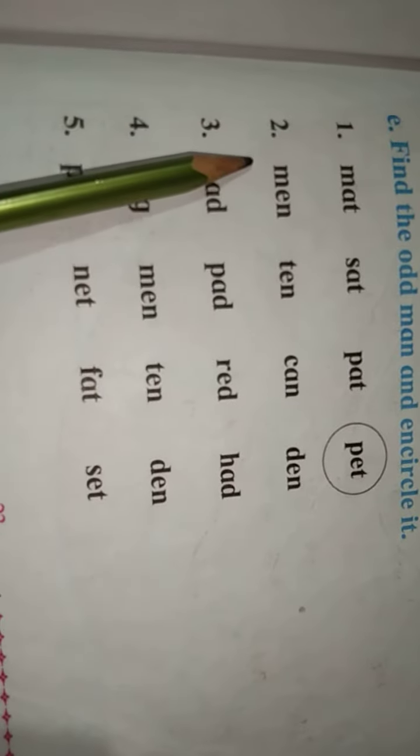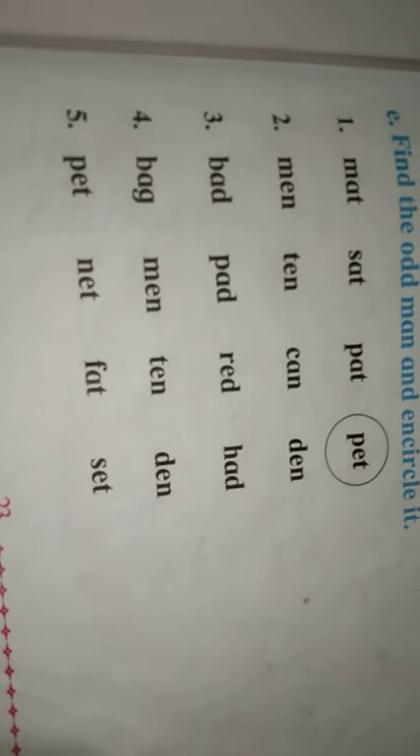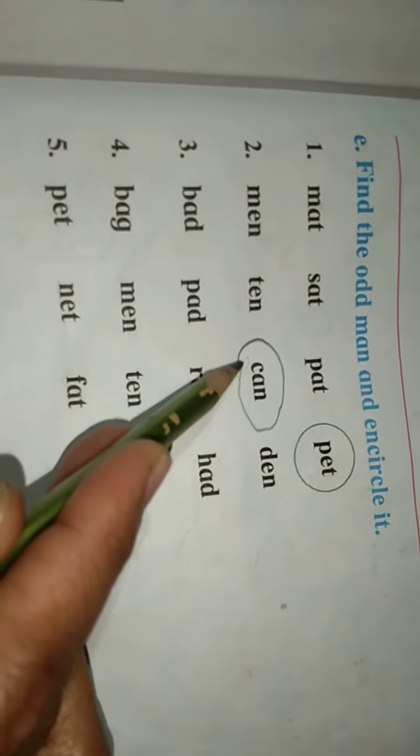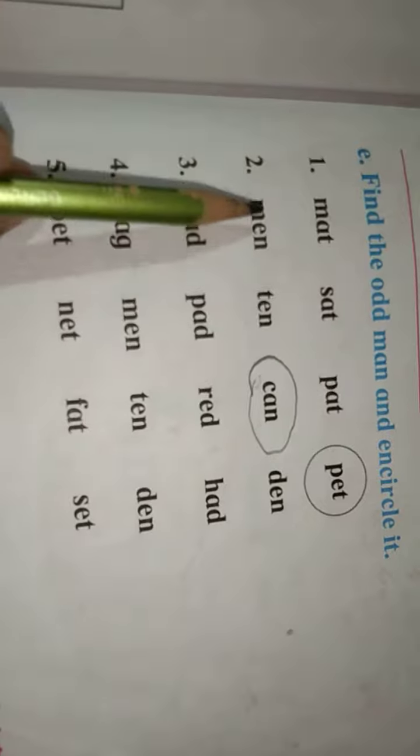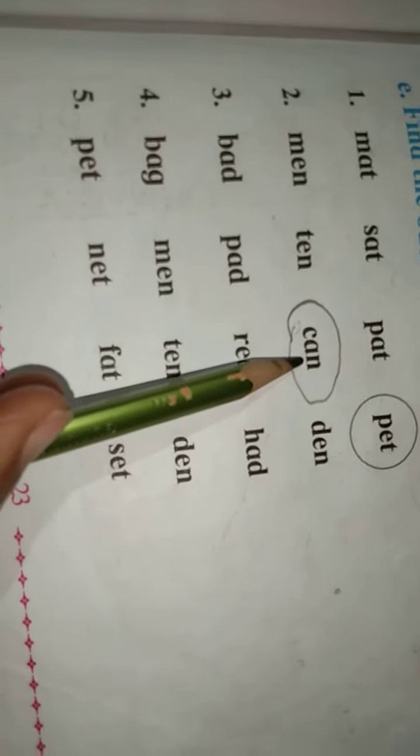Now observe second: main, ten, can and den. Which word here different? Can, that word different. So now circle that word. The other three words: main, ten and den. But can, that pronunciation is 'a'. So that word different.